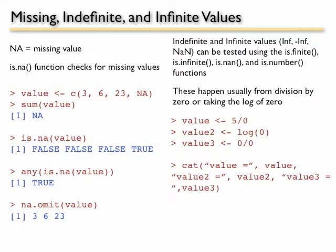And if you want to have a little bit more control over your output, you can use the cat function so that you can paste character strings to label your outputs. What you see is you get INF, minus INF, and NAN.